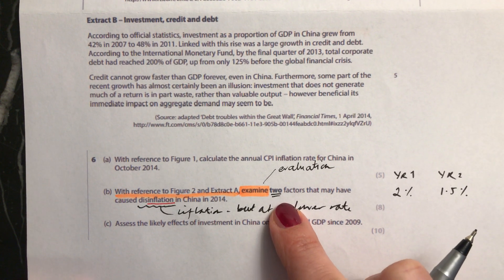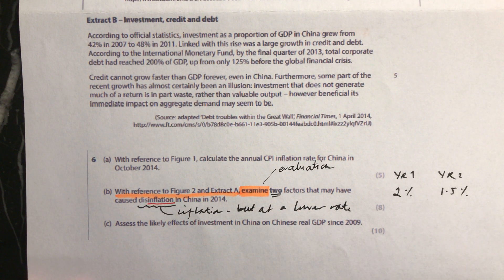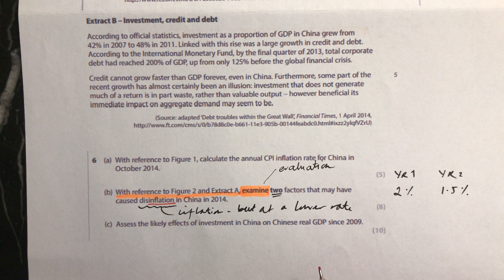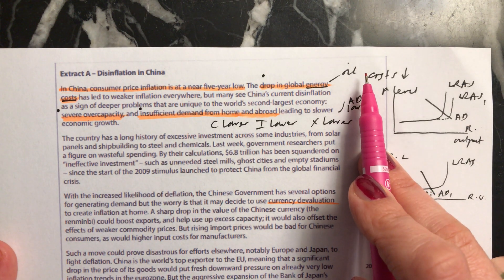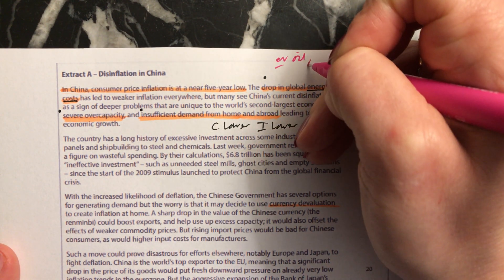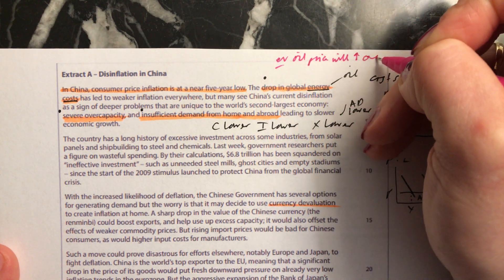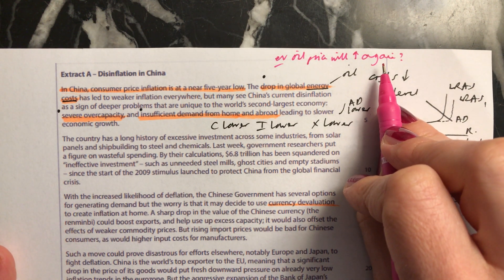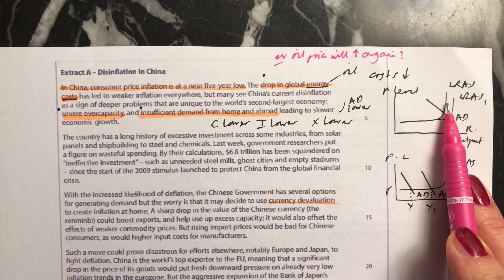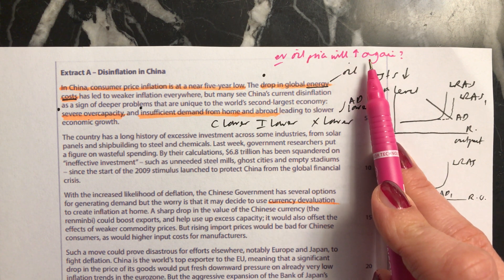Because the question says 'examine,' you need to evaluate as well — consider how the points you've raised might not occur, or why they might not work as expected. For the oil price factor, you can question whether the oil price will increase again. If it does, they might start to see cost-push inflation because costs overall would go up — LRAS would shift to the left over the longer term. That would be the evaluation for that point.